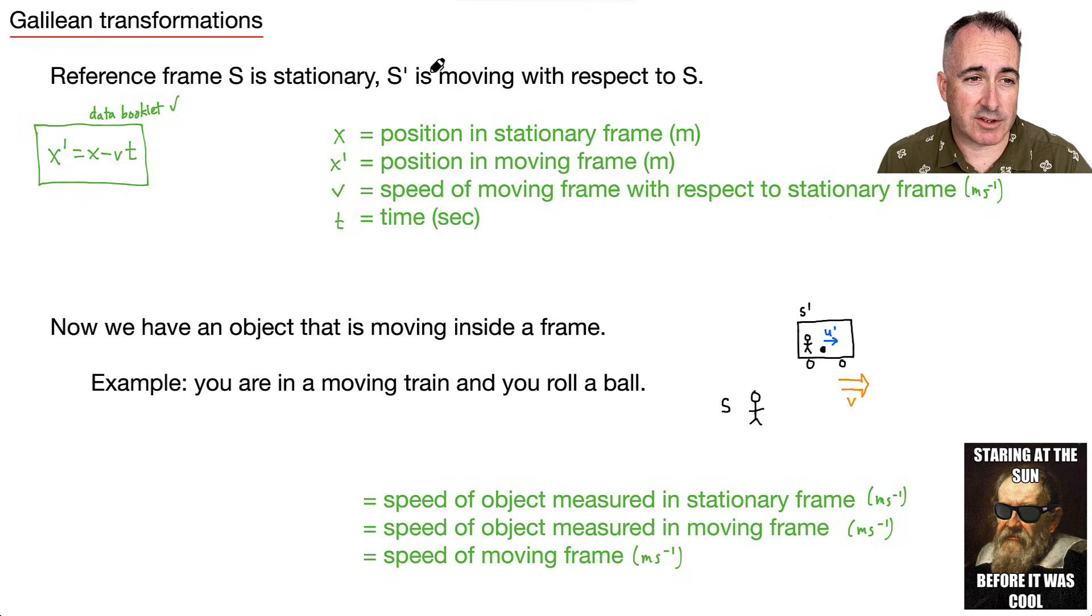So what if now we have an object that's moving inside a frame? So this gets a bit complicated, but let's say you're standing there, you're an observer in frame S. So you're staying still and you're watching a train go by again. We love to use trains as our examples. At least in Denmark, we certainly do.